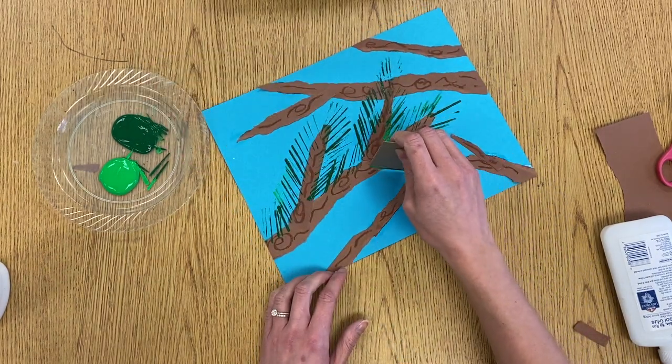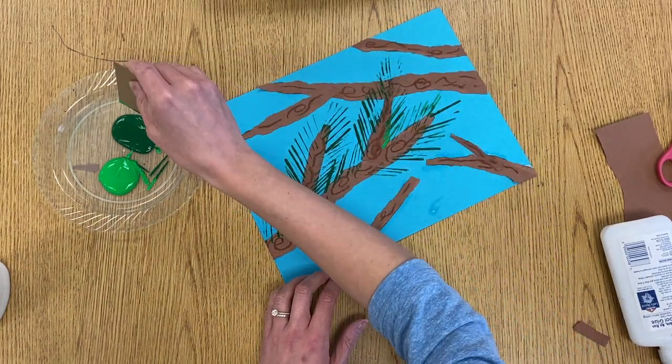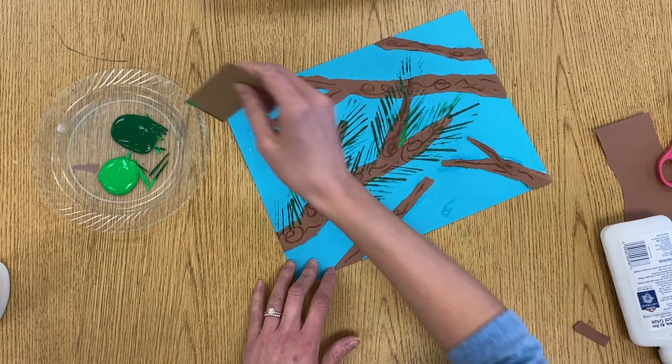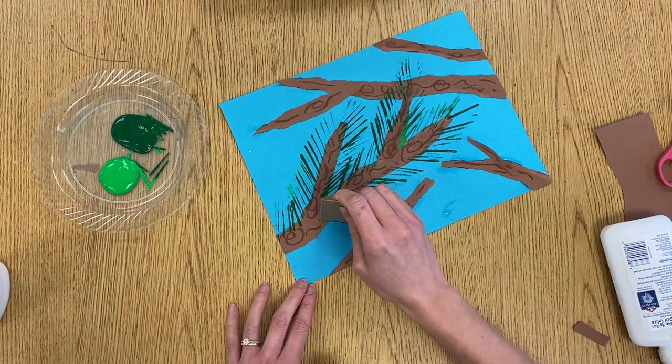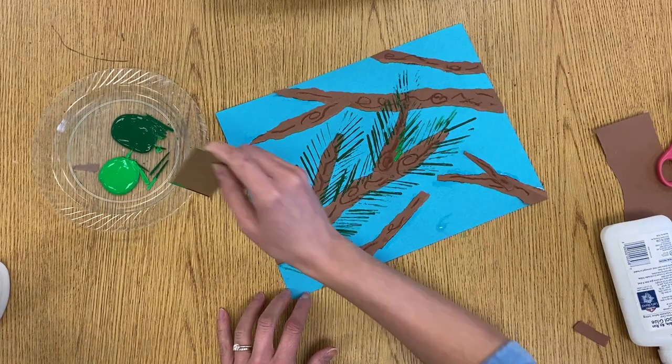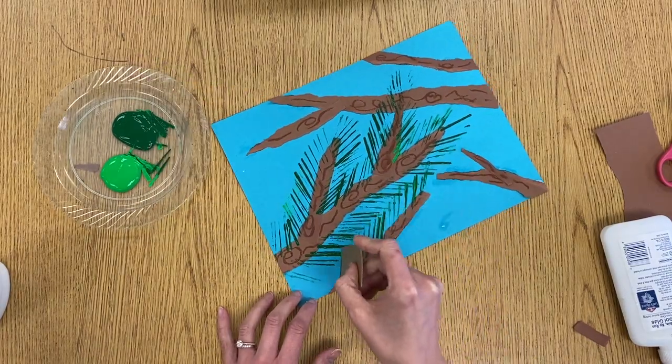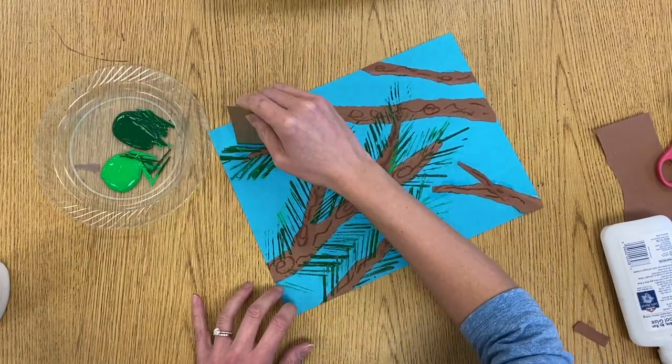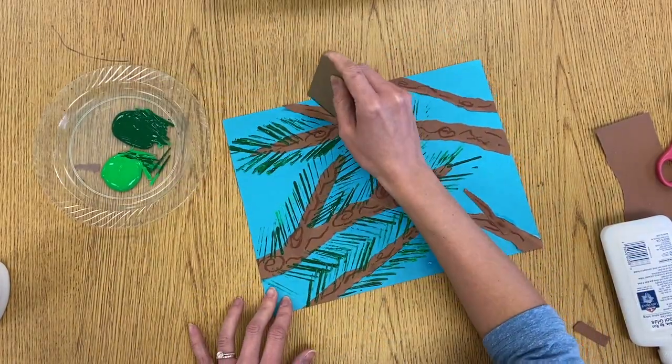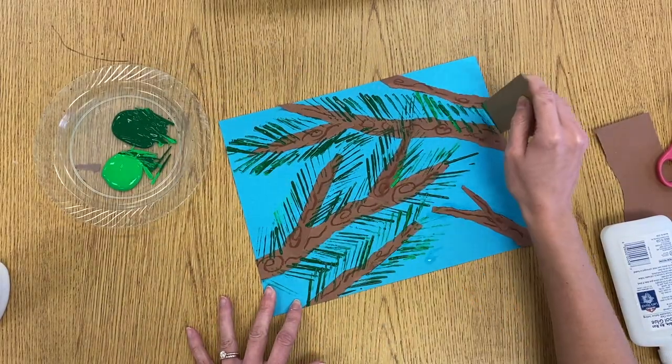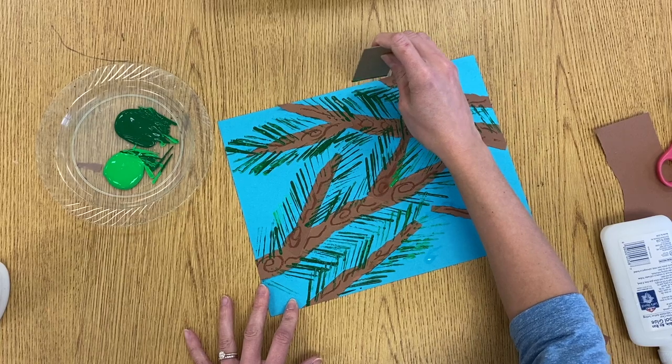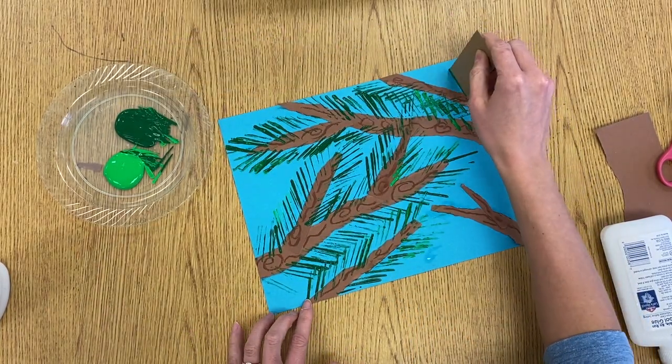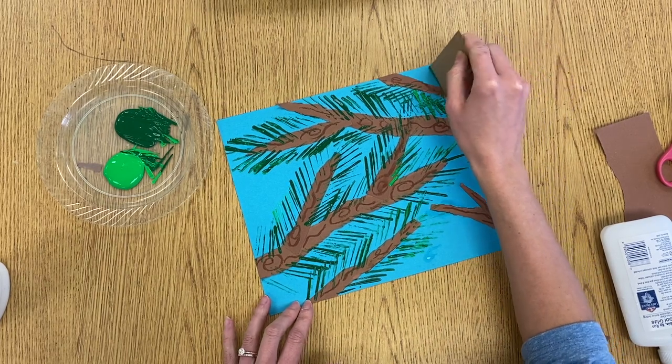And you can see my cardboard kind of runs out of paint every once in a while, so I have to keep going back and adding paint. So like here, it's kind of starting to run out. So I'm going to go get more paint and start stamping where it left off. And here my evergreen needles are actually overlapping each other. That's because those two branches are really close together. So that would happen in nature, so it should happen on my picture too.